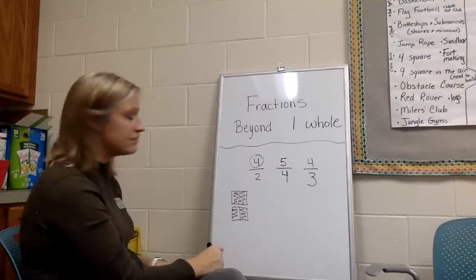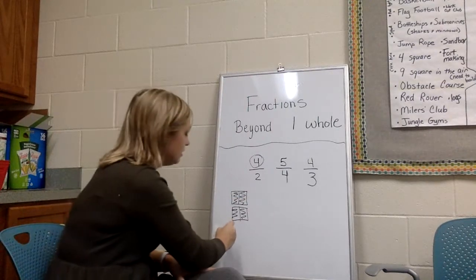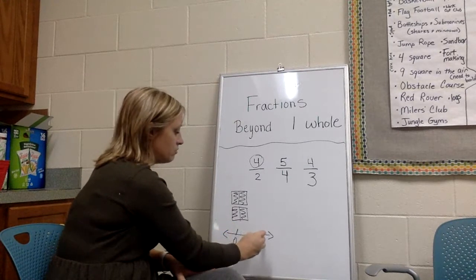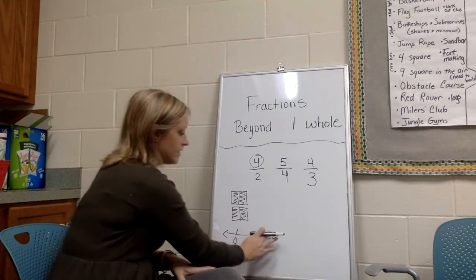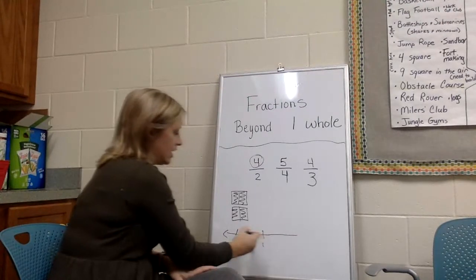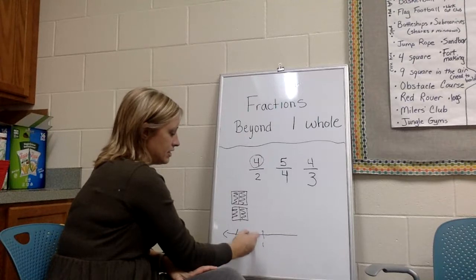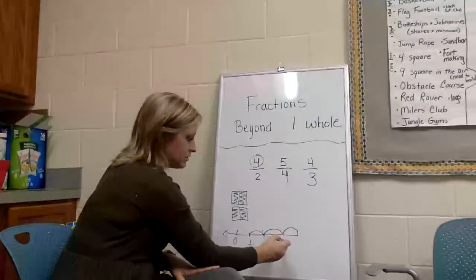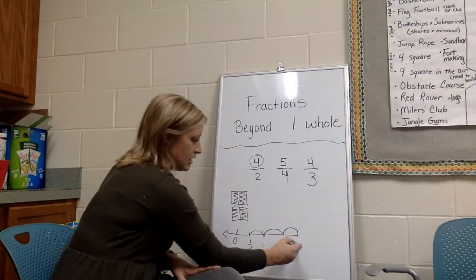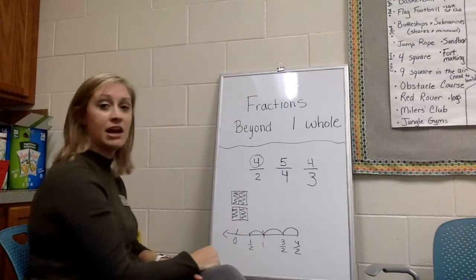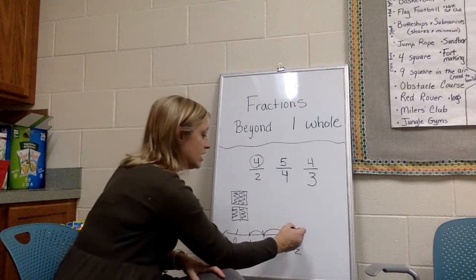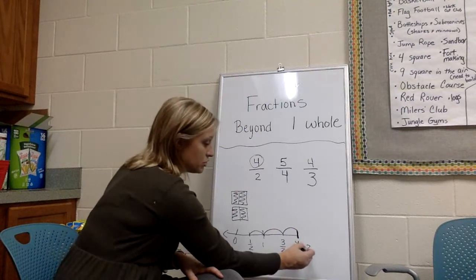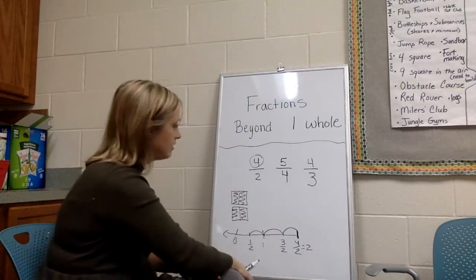If you chose to do this on the number line, you would have had a number line with zero and one. You would have had a half here, you'd have one half, this would have been two halves, then three halves, and then four halves. Is there another name for four halves? Well, there is. It also equals two wholes. We'll talk about that in a little bit.